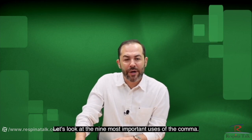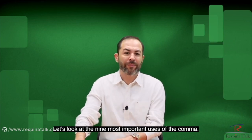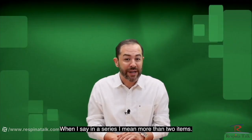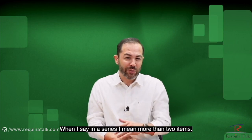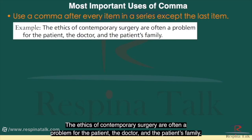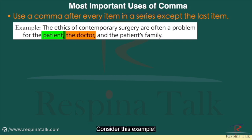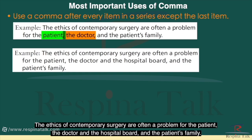Let's look at the nine most important uses of the comma. First, use a comma after every item in a series except the last item. When I say 'in a series,' I mean more than two items. For example: 'The ethics of contemporary surgery are often a problem for the patient, the doctor, and the patient's family.' You probably already knew to put a comma after the first item, but why do you need one after the next-to-last item, 'the doctor'?